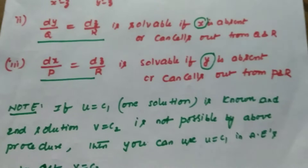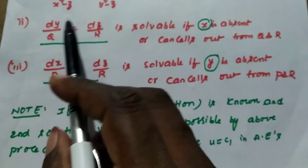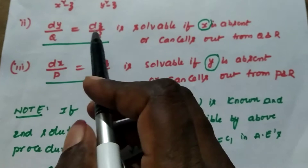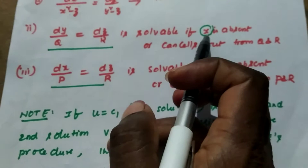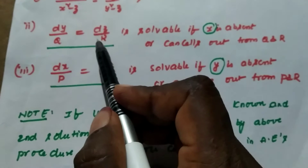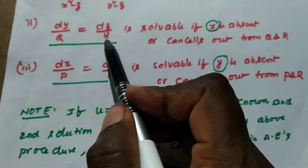Similarly, we consider another set of two fractions: the second and third fractions, dy by q equal to dz by r. We can find the solution from these two fractions if q and r may contain y and z and do not contain x, or if q and r contain x but we are able to cancel out x from q and r.